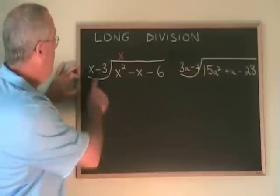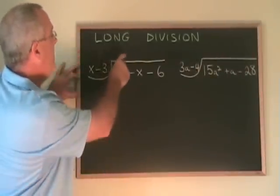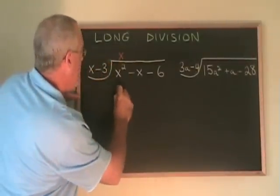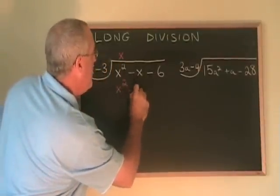Then, we multiply this binomial by the x, and we write the answer here. x times x is x squared. x times negative 3 is minus 3x.